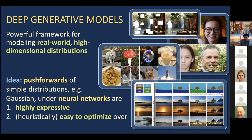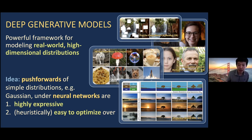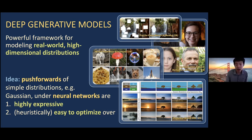In this talk, instead of focusing on applications, my goal is to take a deep dive into framing these questions from a theory standpoint and report on some of the first steps towards building a principled theory for generative models. The guiding idea behind popular frameworks for deep generative modeling is that push forwards of simple distributions — for instance, Gaussian — under neural networks are: one, highly expressive in the sense that they can capture real-world distributions, and two, heuristically easy to optimize over.